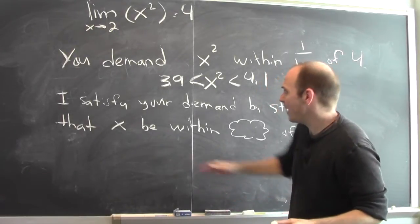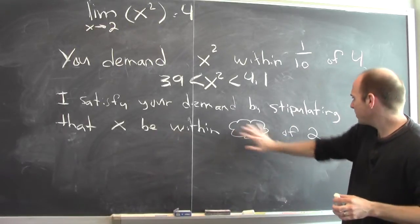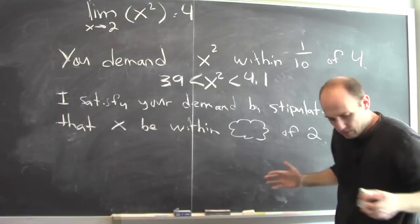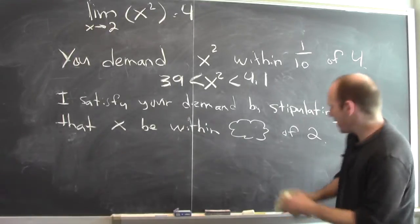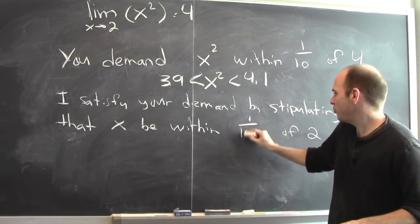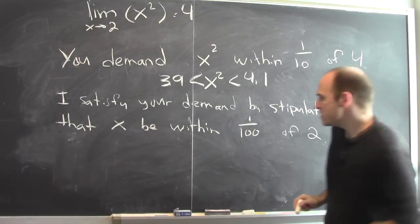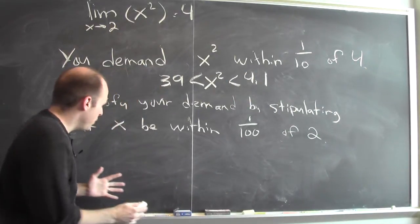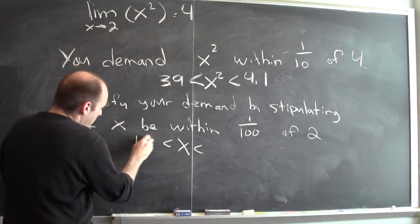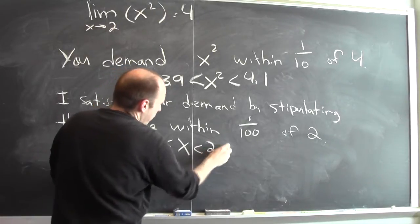What does that mean? I'm going to satisfy your demand by stipulating that x be within some small distance of 2. So how close is sufficiently close? In this case, let's make x be within a hundredth of 2 and see what happens. So if x is within a hundredth of 2, that means that x is bigger than 1.99 and smaller than 2.01.